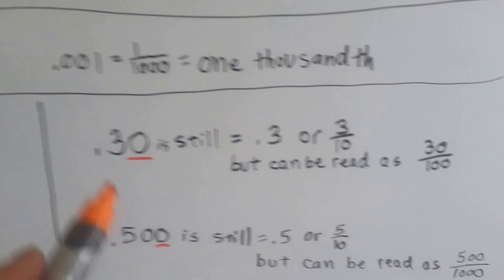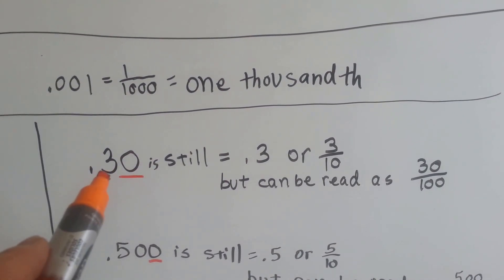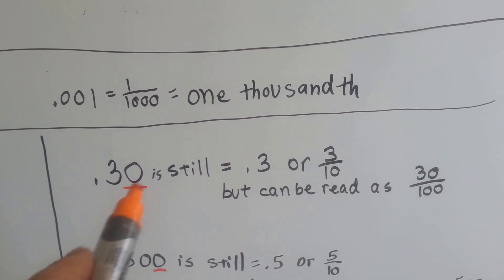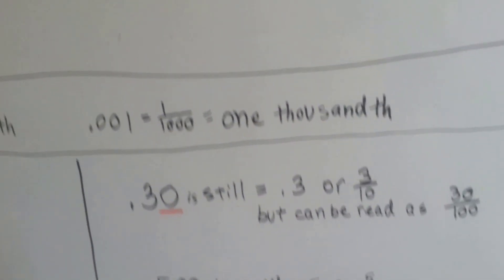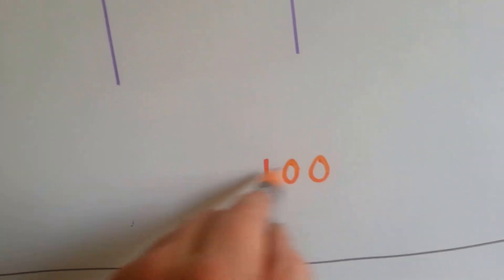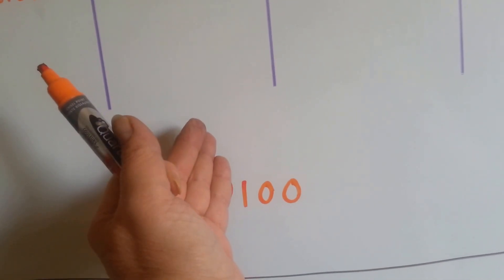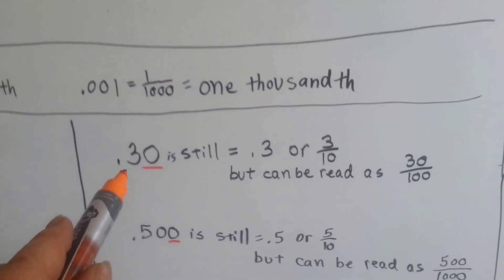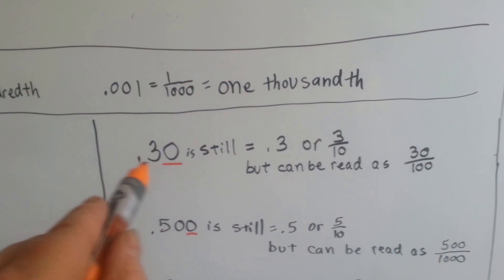Sometimes you'll see a decimal and there'll be a zero at the end, like this. This is still three-tenths. A zero is just a placeholder — it can still be read as thirty-one-hundredths because the zero is in the hundredths place, but it still equals three-tenths because we can just take that zero off. It's as if I wrote one hundred with an extra zero — that zero could be there but it doesn't make any sense. There's no value there. So on this side of the decimal point, the same thing happens: it can hold a place value and be thirty-one-hundredths, but it still really is point-three or three-tenths.